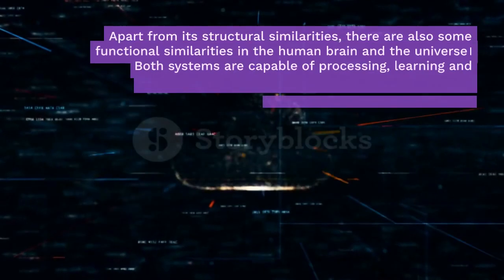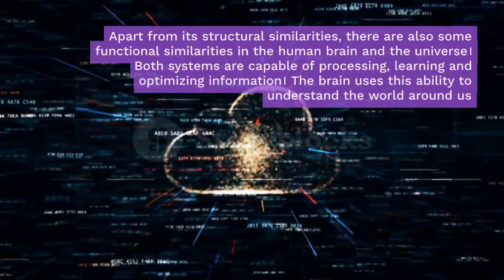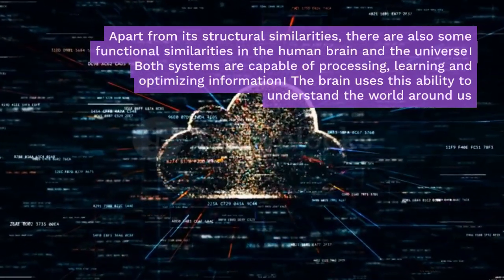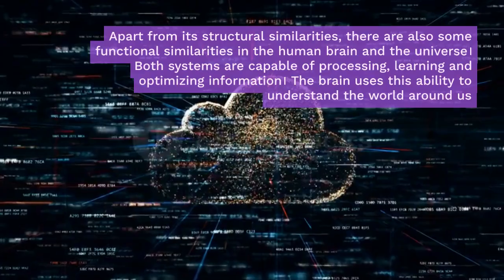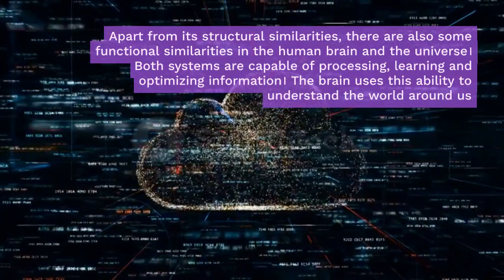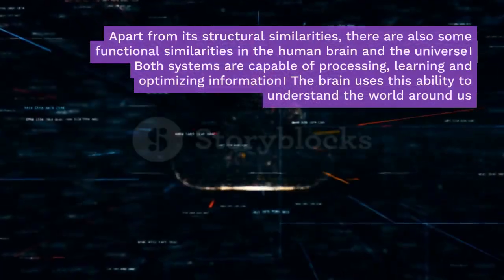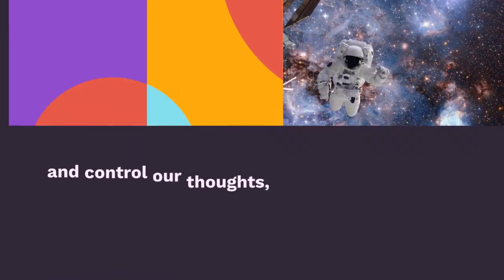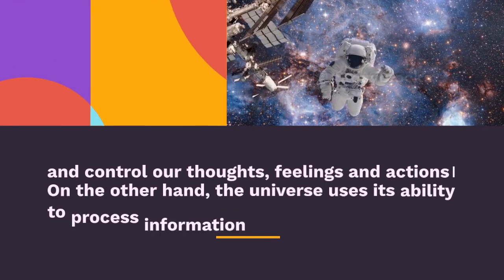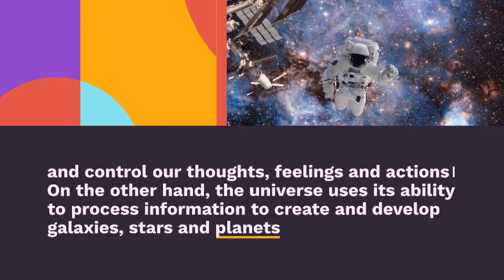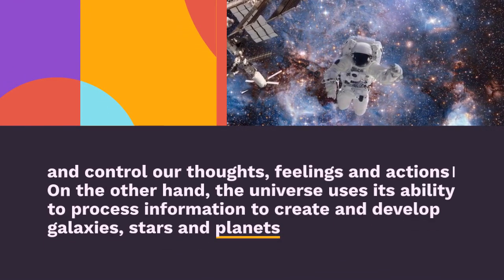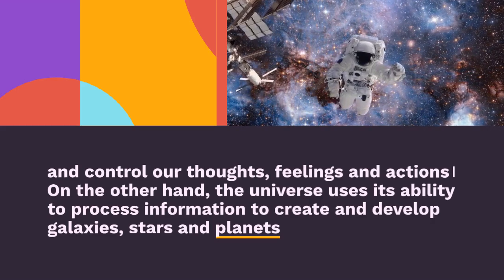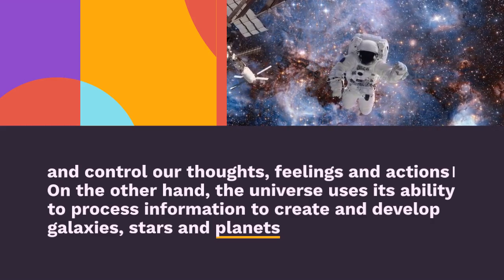Apart from structural similarities, there are also functional similarities between the human brain and the universe. Both systems are capable of processing, learning and organizing information. The brain uses this ability to understand the world around us and control our thoughts, feelings and actions. The universe uses its ability to process information to create and develop galaxies, stars and planets.